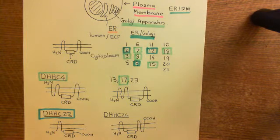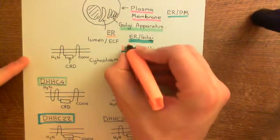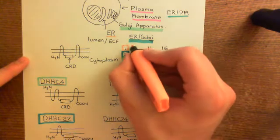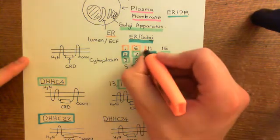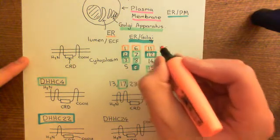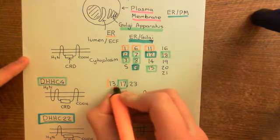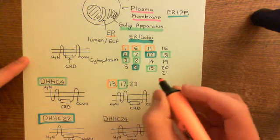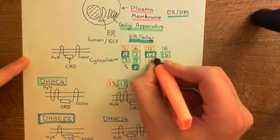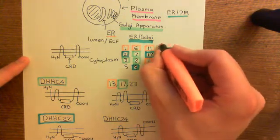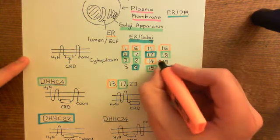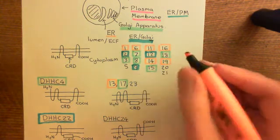Next we'll move on to the pure ER ones, which we're highlighting in orange. DHHC1 is purely present within the ER. DHHC6, DHHC11, DHHC13, DHHC14, DHHC16, and DHHC19 are all purely present within the ER membrane. All of those now highlighted in orange are purely present in the ER membrane.